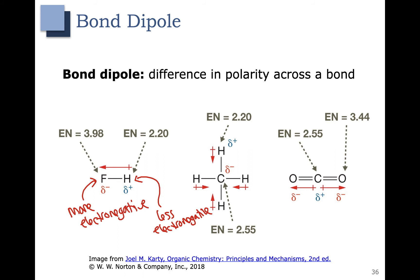Here's one last example. With carbon dioxide, we're looking at the carbon-oxygen bonds. We have one arrow going to the right and one arrow going to the left for the other carbon-oxygen bond in the other direction.